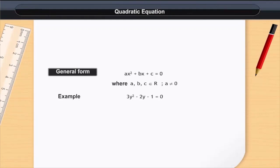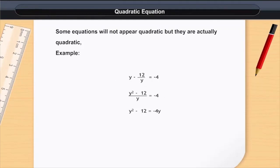Example: 3y² - 2y - 1 = 0. Some equations will not appear quadratic, but they are actually quadratic.